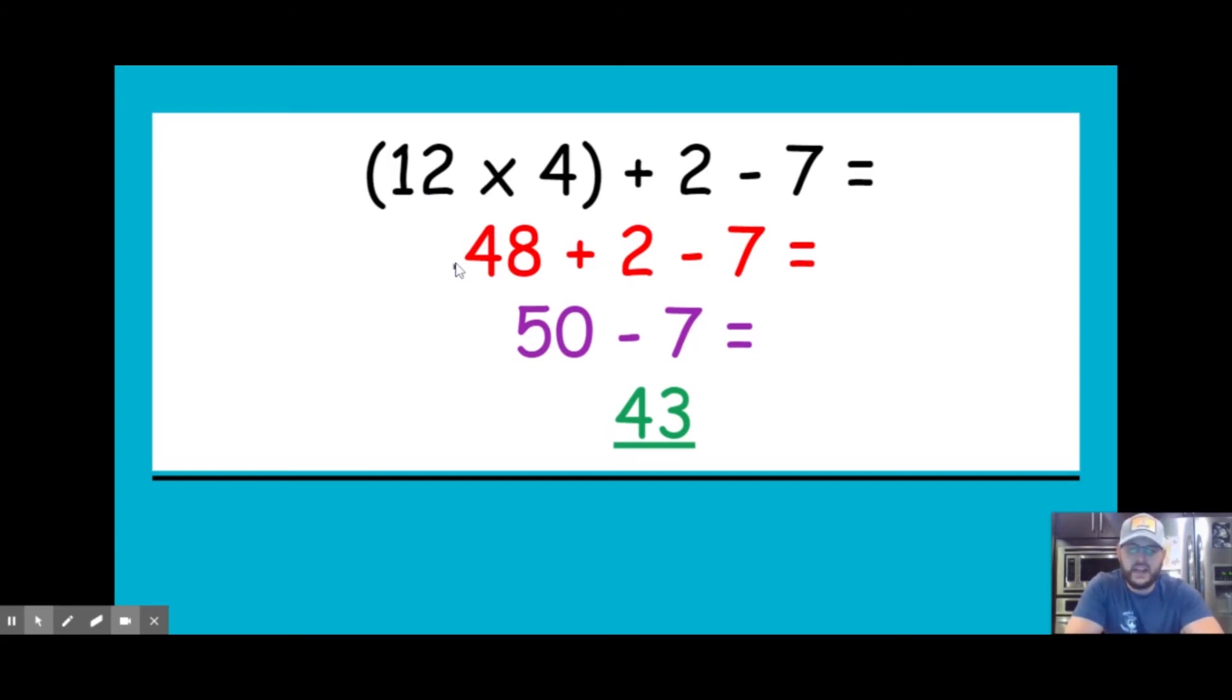I don't have any exponents. And I don't see any multiplication or division. But I do see addition and subtraction. And in this case, I have both of them. So I'm going to do whichever one comes first from left to right. So in this case, it is addition. 48 plus 2 is 50. I'm going to bring the rest of the expression down again. 50 minus 7 is all that I'm left with. And 50 minus 7 is 43. So the solution to this expression after following the order of operations is 43.